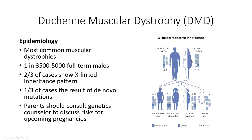For any male child, there will be a 50% chance that the child will inherit the condition and a 50% chance of inheriting the normal allele. For any female child, there will be a 50% probability that the child will be a carrier of the condition, having inherited the affected allele maternally and a normal allele paternally. The remaining probability is that the child will inherit two normal alleles.